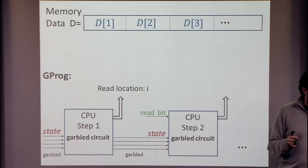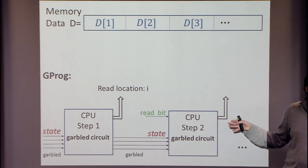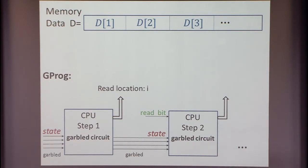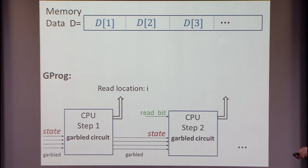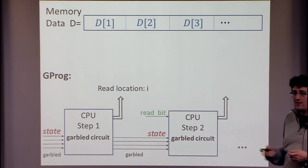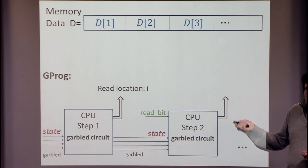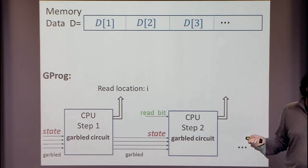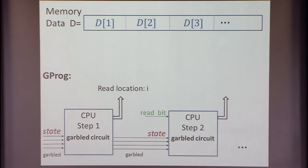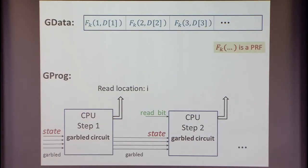The state of the circuit is going to be garbled and travel from one circuit to the next. It's going to remain garbled — you can't really see these wires. In addition, it just outputs the read location in the clear, because we're willing to reveal the locations being read at this point. That's going to be the garbled program — roughly. It's not exactly it, but almost.